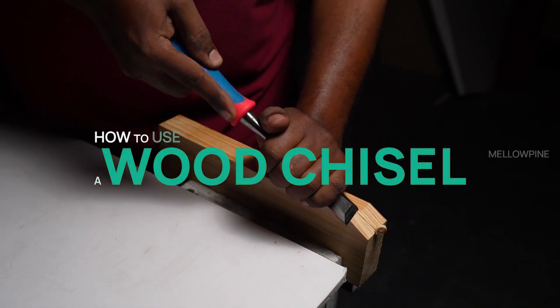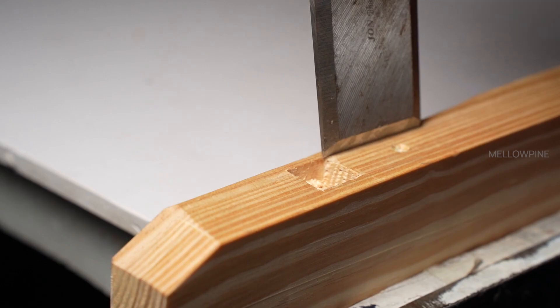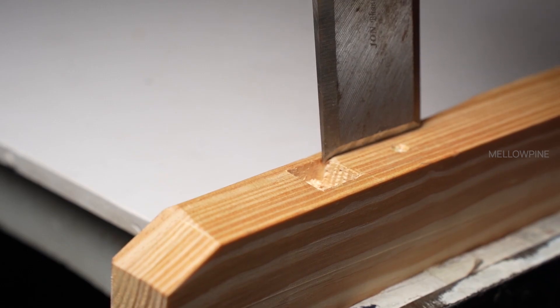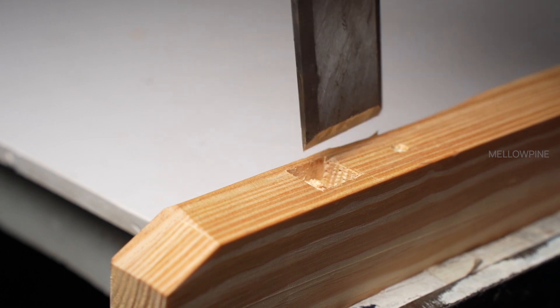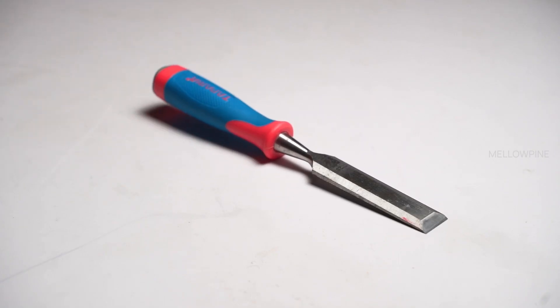In this video I'll show you how to use a wood chisel properly. A wood chisel is essential for shaping, carving, and smoothing wood surfaces. It consists of a sharp metal blade with a handle, allowing you to remove material with precision and control.